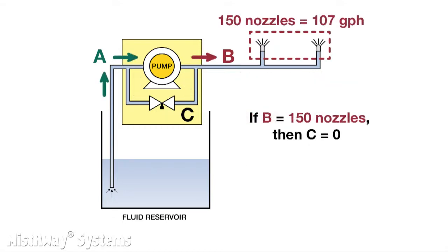It turns out that 107 gallons per hour is enough capacity to theoretically supply 150 nozzles. With that much flow to the nozzles, there wouldn't be any flow through the bypass. We say theoretically because in reality you can rarely configure a nozzle circuit with more than about 70 to 80 nozzles. We'll talk about why that is in another video where we discuss pressure drop.